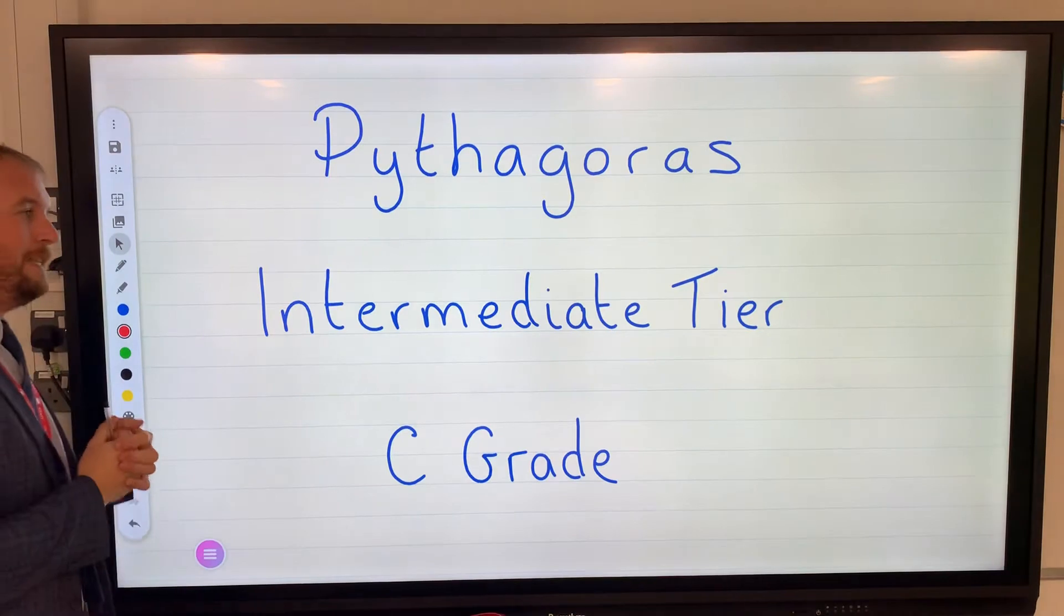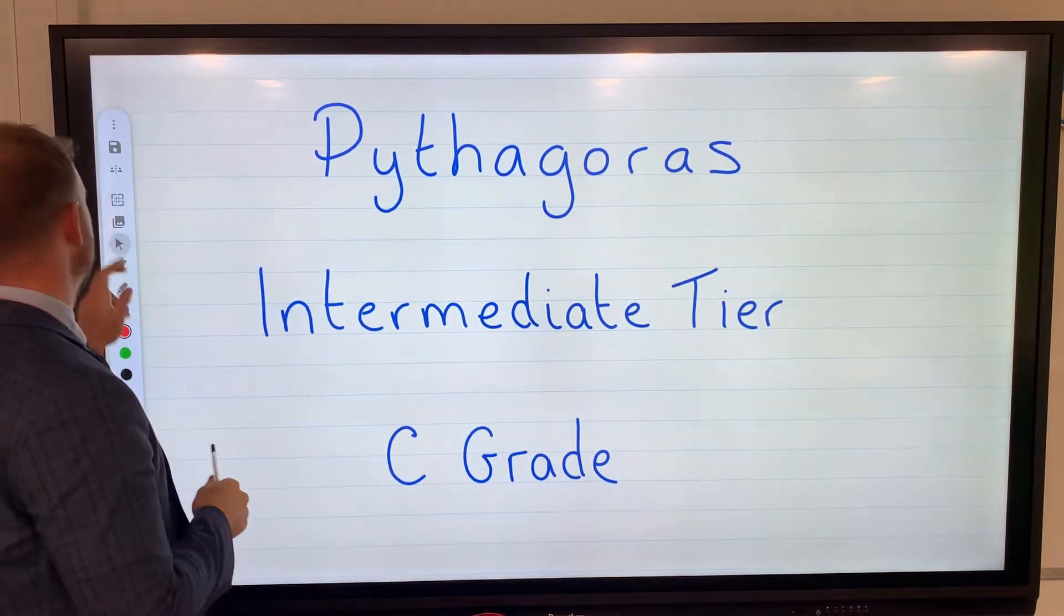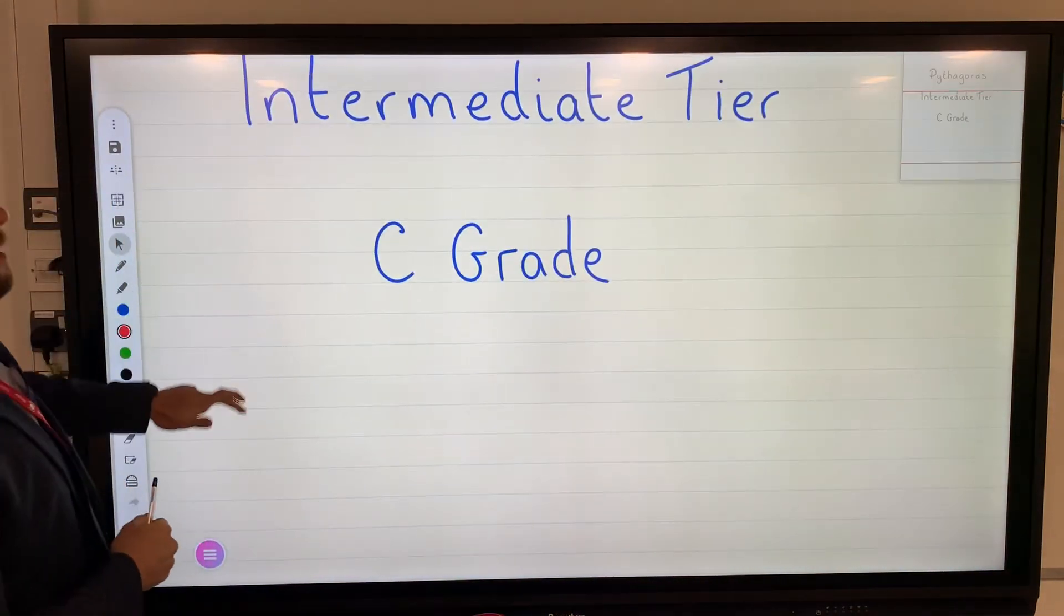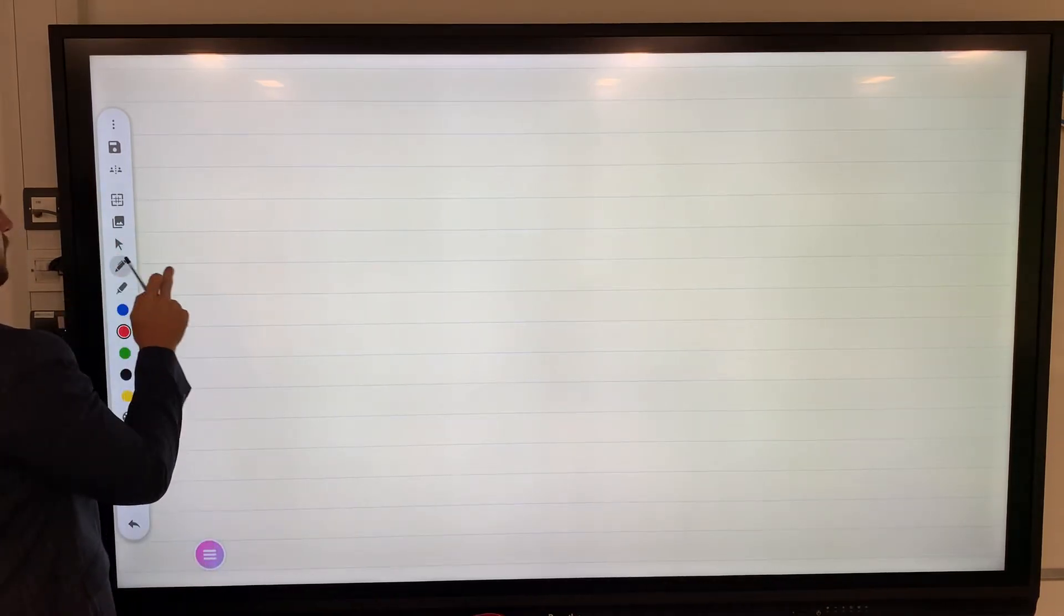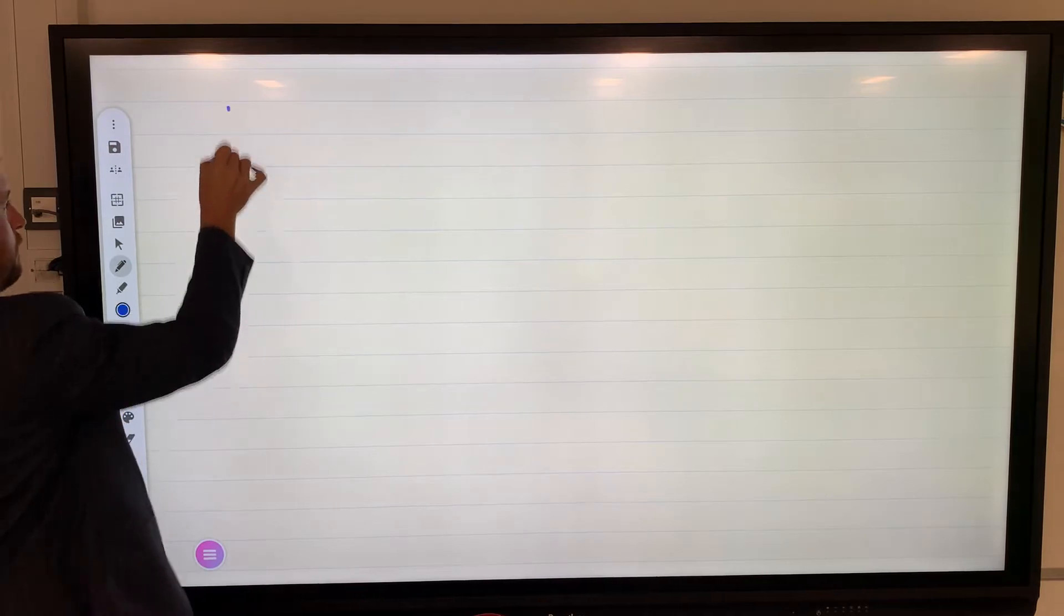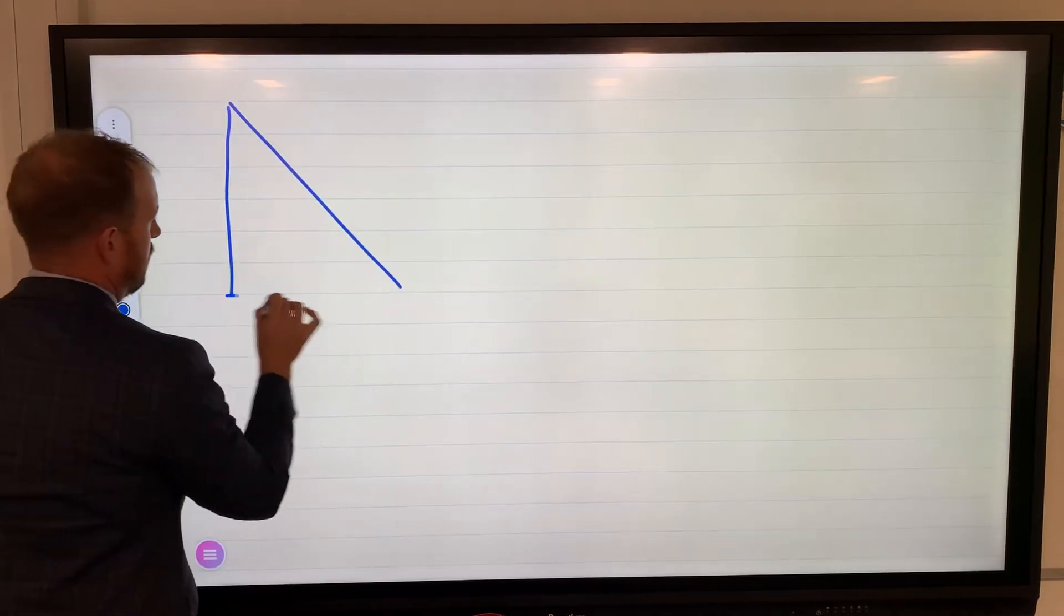Okay, so Pythagoras is intermediate here at C grade GCSE. Pythagoras is used with right-angle triangles, so let's start off with a right-angle triangle.